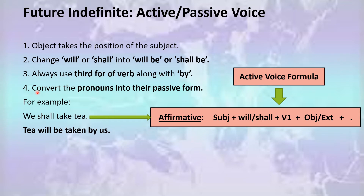Your sentence would look like this: 'T will be taken by us.' You can see that 'T' was the object in the sentence, so it has been placed at the start. With 'T' we use the auxiliary verb 'will' — the original auxiliary was 'shall', but you should keep in mind that according to the subject, you change the auxiliary verb. Then you add 'be taken' — the third form of the verb — followed by 'by us', changing 'we' into 'us'.